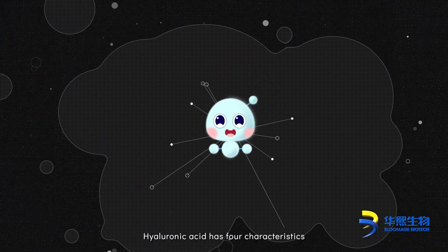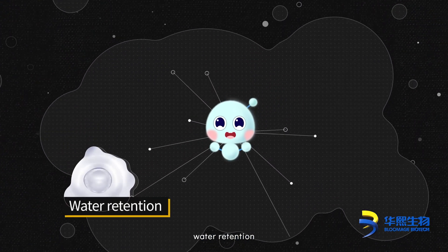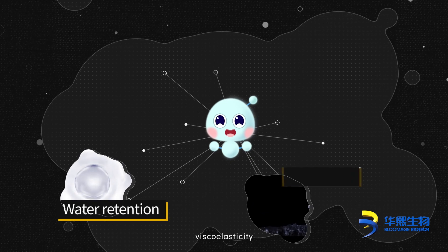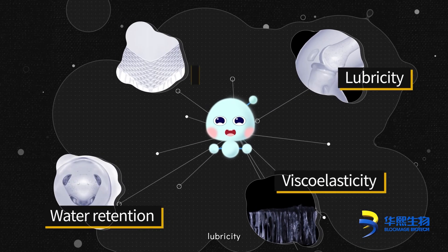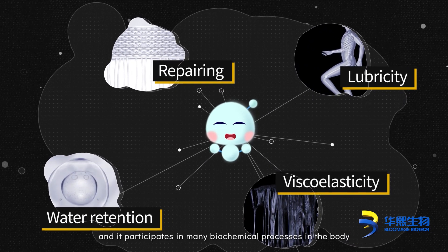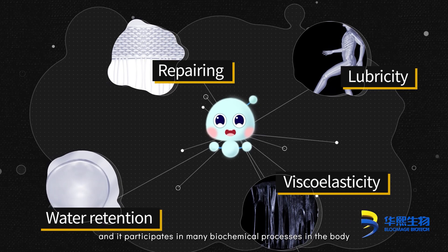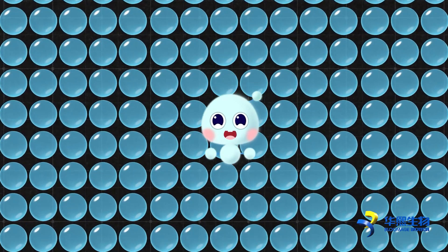Hyaluronic acid has four characteristics: water retention, viscoelasticity, lubricity, and repairing, and it participates in many biochemical processes in the body.